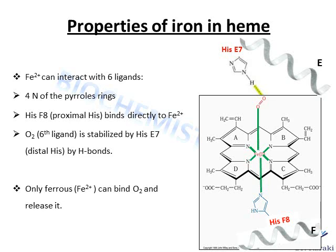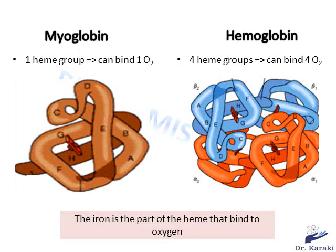The role of the distal histidine is to stabilize oxygen by hydrogen bonding. The iron ion must always be in its reduced state Fe2+ in order to bind oxygen, because if it is oxidized to Fe3+, oxygen can no longer bind and no oxygen will be delivered to tissues. In this case, the blood will have a brown chocolate color.